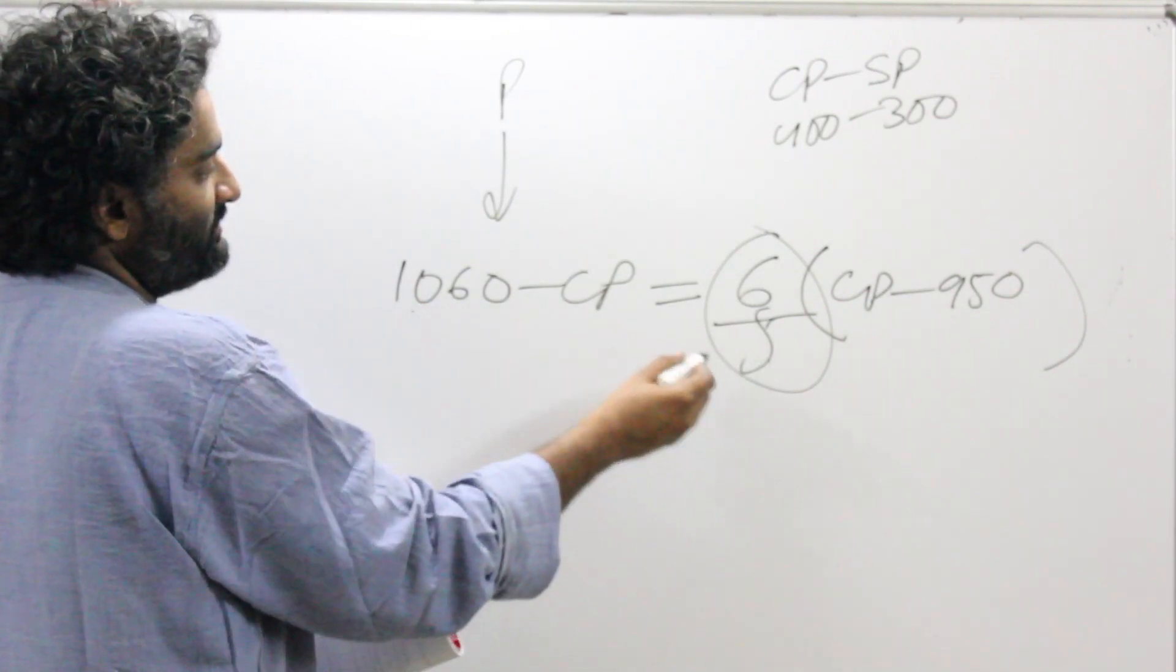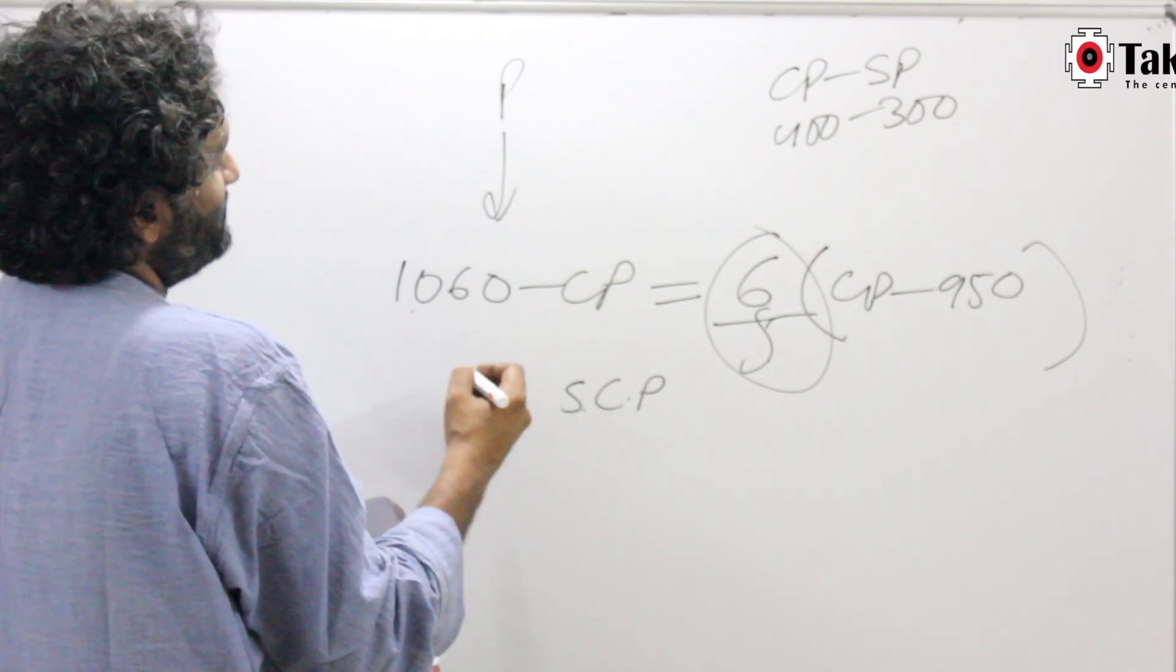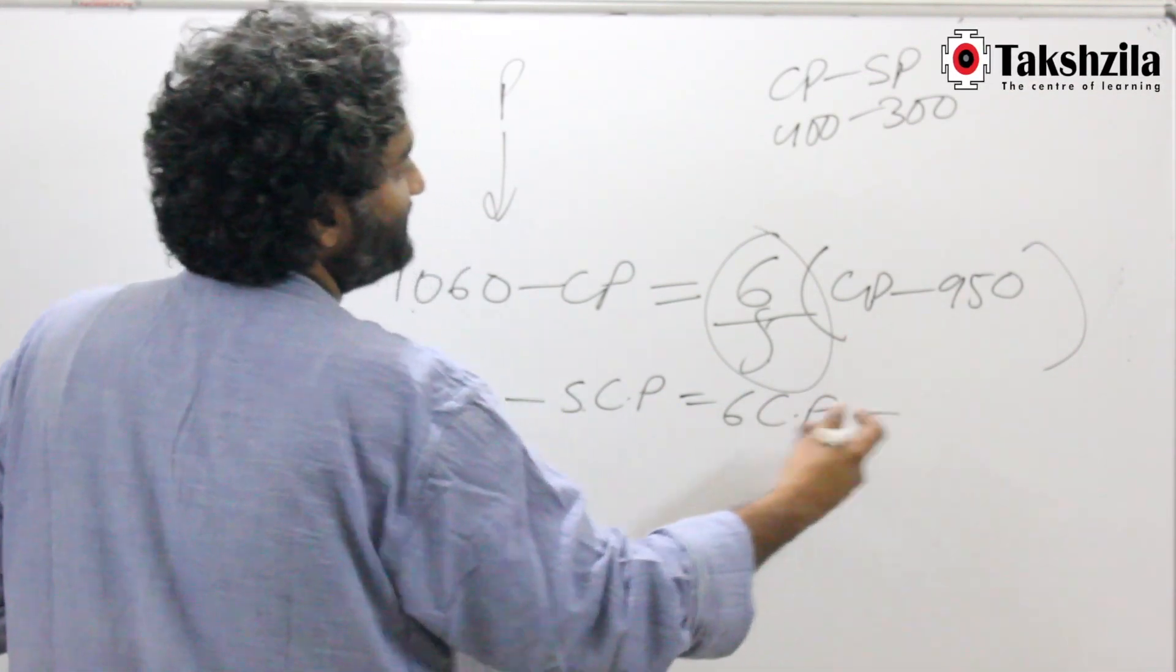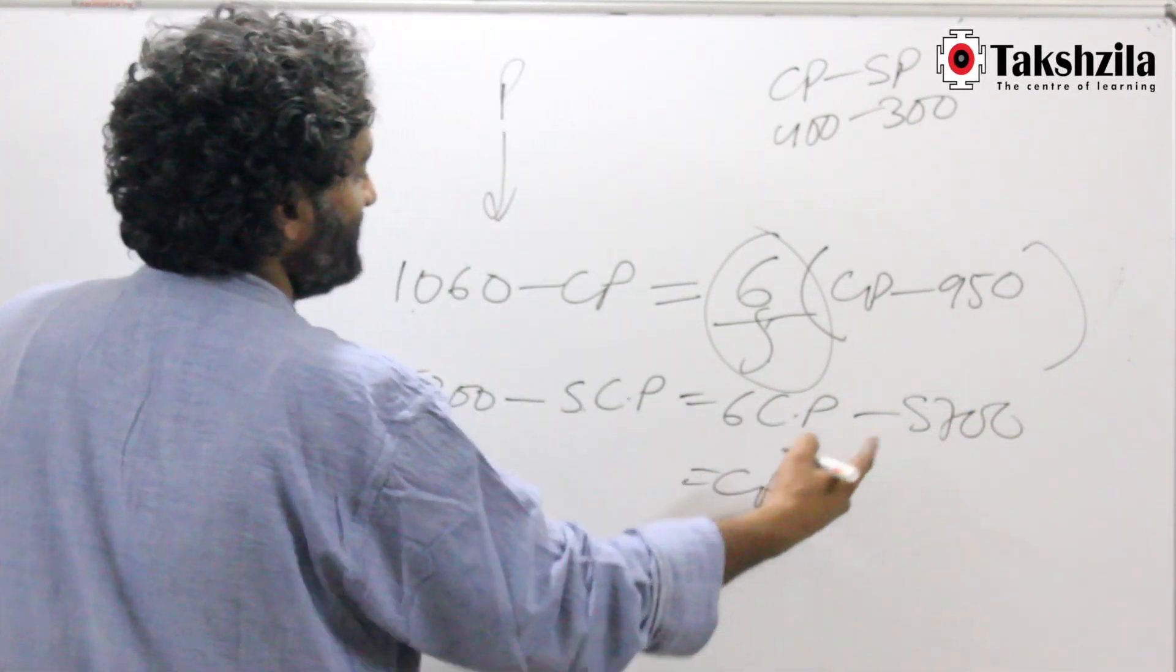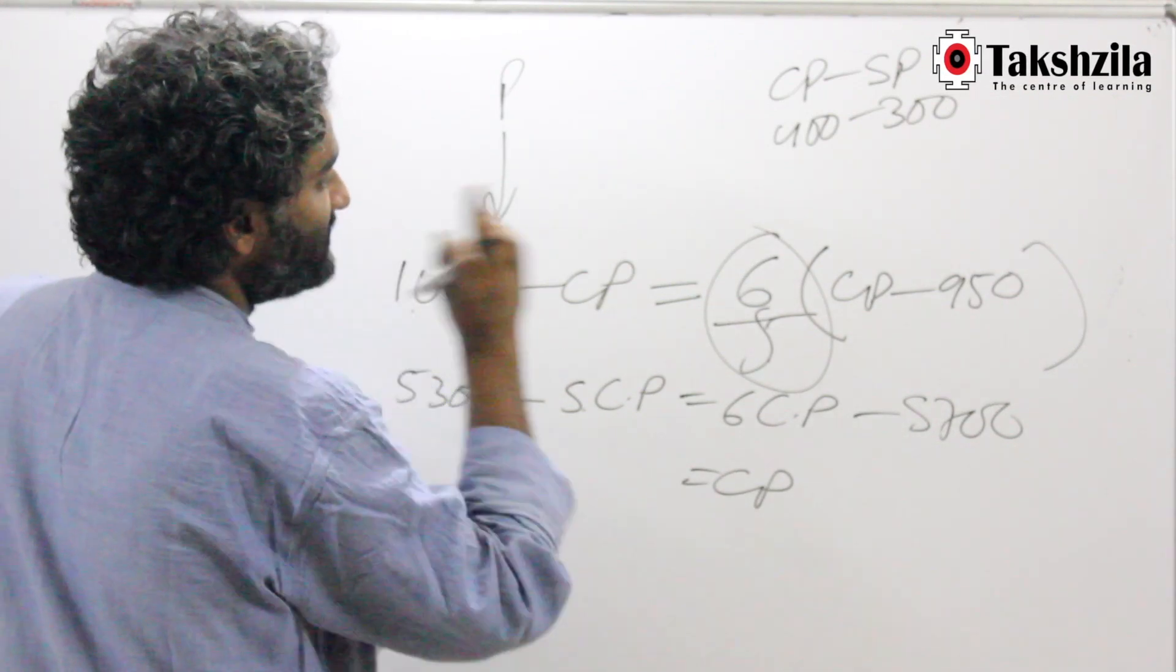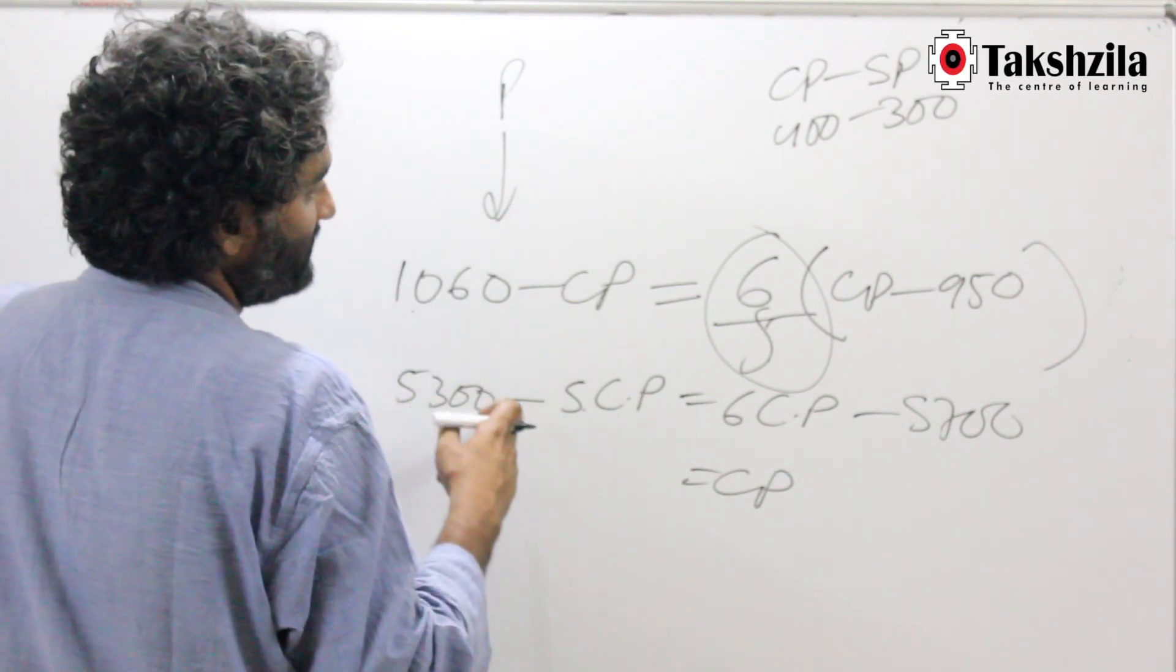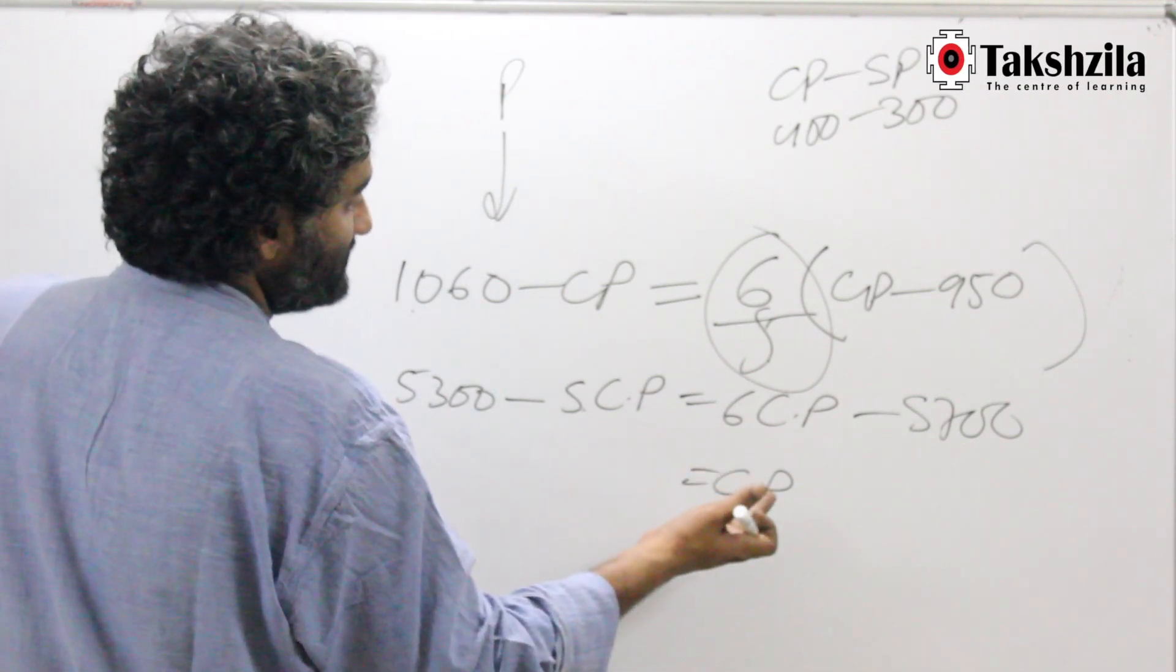So you move it here. This becomes—multiply this by 5—so this becomes 5 CP, obviously, and this becomes 5300. So this becomes 5300 minus 5 CP, and this becomes 6 CP, and 6 into 950—that becomes 5700.